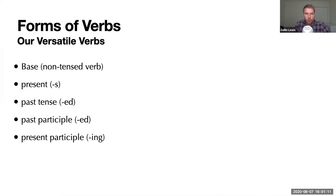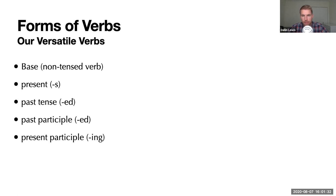Just to kind of recap what happens in the chapter: in English, we have the non-tense form of the verb, what we call the base, sometimes the infinitive, and then we have four ways of tensing or inflecting our verbs with endings. We do that to create present tense, past tense, the past participle, and the present participle. Present usually takes an S at the end. The past tense and the past participle usually take an ED. The present participle usually takes an ING. I haven't mentioned future — I will get to that — but this is about how we inflect our verbs with endings to change the tense.